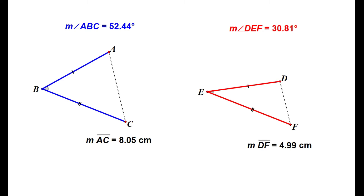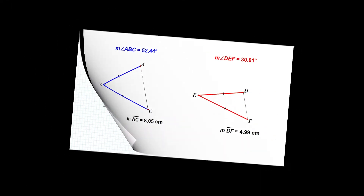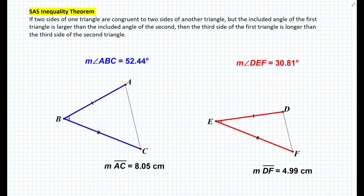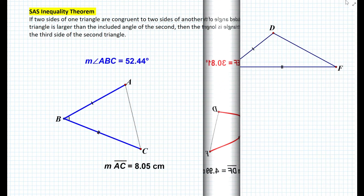So there's a theorem we can develop at this point called the SAS inequality theorem. It states the following: if two sides of one triangle are congruent to two sides of another triangle but the included angle of the first triangle is larger than the included angle of the second, then the third side of the first triangle is longer than the third side of the second triangle. And since this is a theorem it can be proven — so let's prove it.